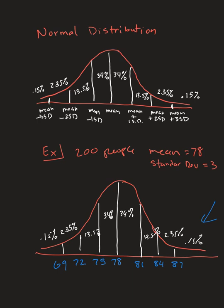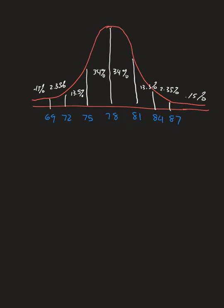From this we can see that 68% of people scored between 75 and 81, only 0.15% scored higher than 87, and half the class did better than 78. Now we can answer more specific questions — for example, what percent of people scored higher than 81?